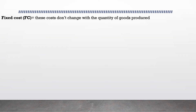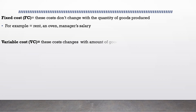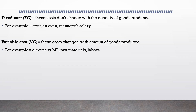Every firm has two types of cost: fixed cost and variable cost. Fixed costs are those costs that do not change with quantity produced. For example, in a bakery, an oven is a fixed cost — whether you produce one cake or ten cakes, you still need that one oven. Similarly, a manager's salary is a fixed cost regardless of how many units you produce, and rent is a fixed cost regardless of how many cakes you produce — you still have to pay rent for that space.